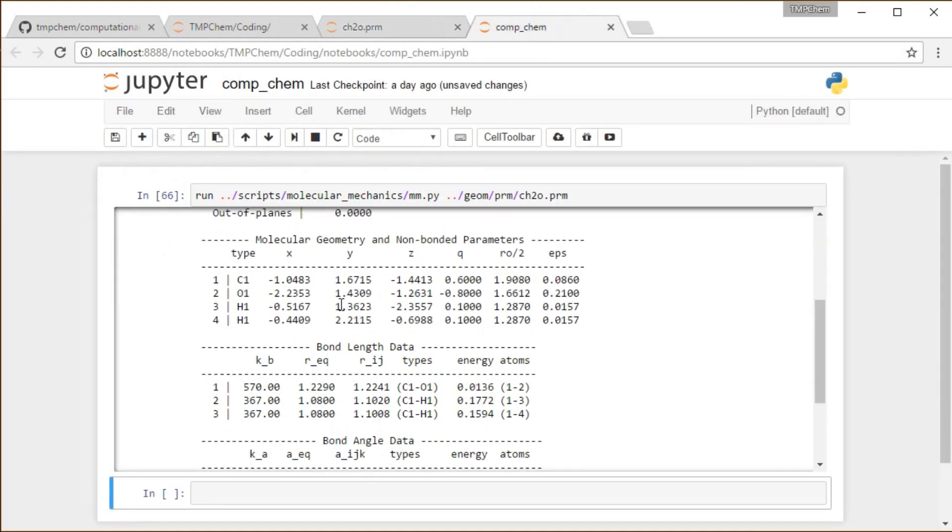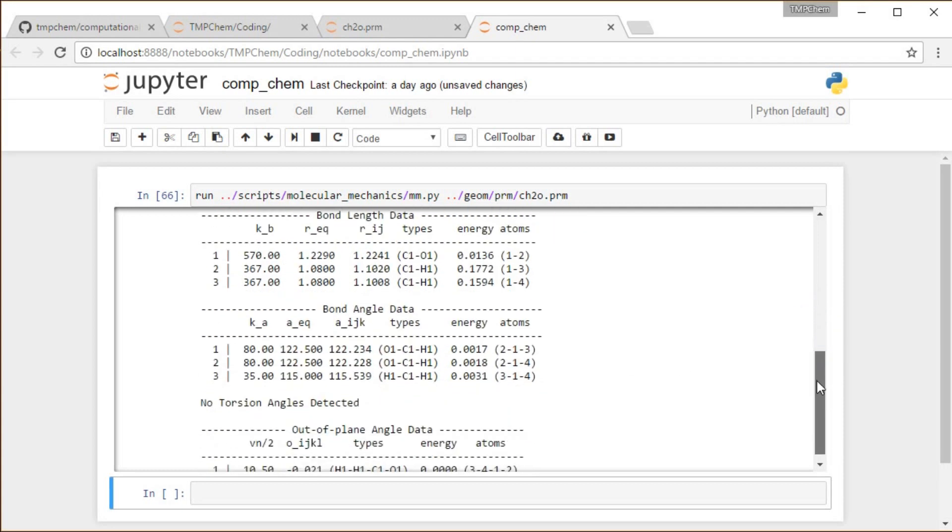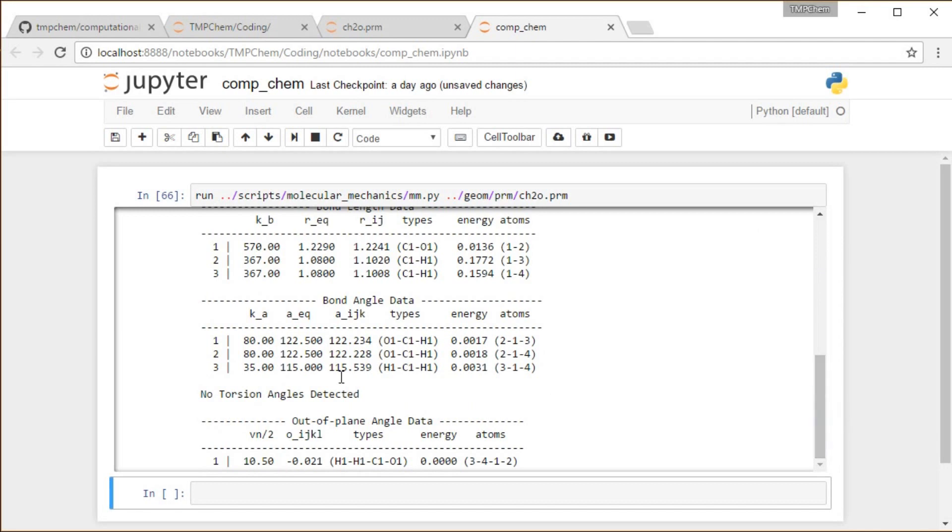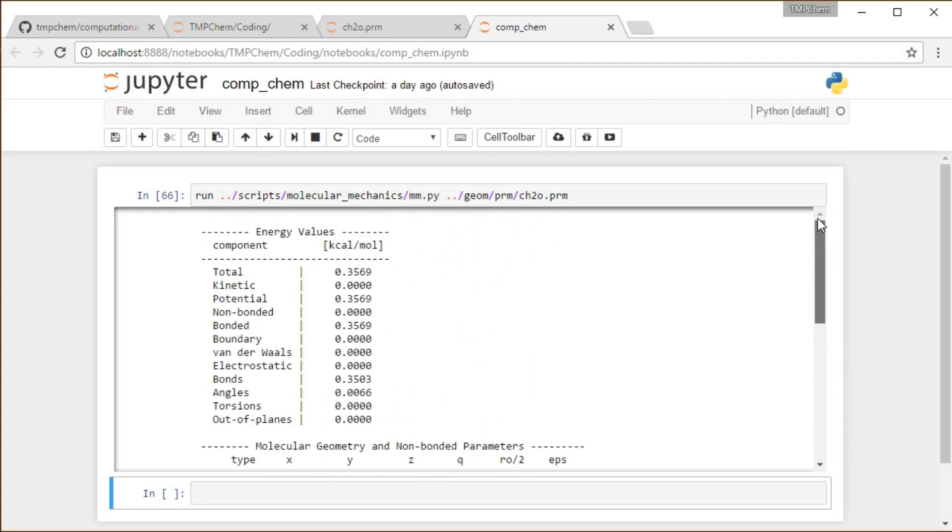It's spitting back to me the geometry that I read in, some bond parameters and bond length data, some energy from that. Energy from the bond angles, didn't find any torsions. And then we have our out-of-plane angle which was negative 0.021 degrees. Apparently that was small enough that our energy does not show up at this scale. I'd probably have to print out some more digits in order to see where this value ends up becoming non-zero.